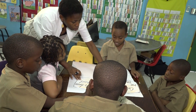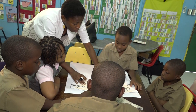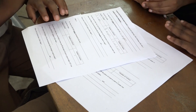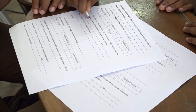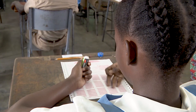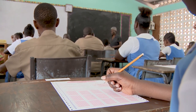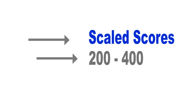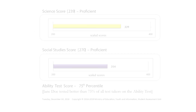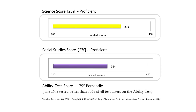Scaled scores are used to report students' achievement of the National Standards Curriculum, NSC. Scaled scores are derived by taking the number of questions a student answered correctly on each test, then converting these to a common scale that ranges from 200 to 400. The report will show students' scaled scores in four subjects. The scaled scores are directly aligned to achievement-level descriptors.